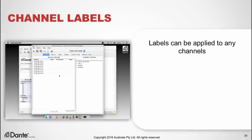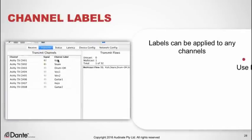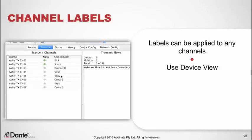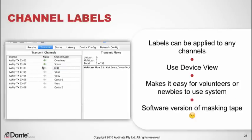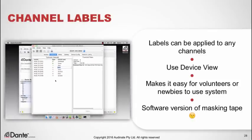In addition to naming devices, you can use the device view to label individual channels of transmitters or receivers. This is a really great tool for quickly identifying individual channels in a live mix and makes it easy for volunteers or newcomers to use the system. You can think of it as a software version of the masking tape we typically find on consoles.